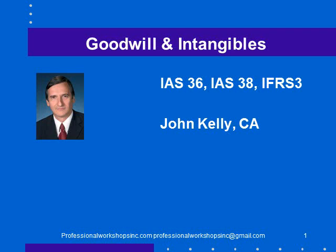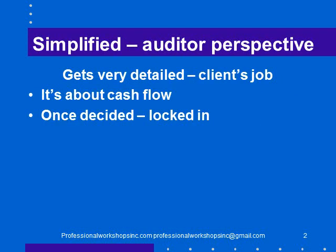Hi, it's John Kelly. In this module we are going to discuss goodwill and intangibles — a little bit about how to account for them and a little bit about how to audit them. We're going to talk about IAS 36, IAS 38, and IFRS 3. I'm going to take a simplified view of the accounting, taking something of an auditor's perspective. Under IFRS, accounting for goodwill and intangibles can get very detailed with a lot of defined terms, but that detail is the client's job.